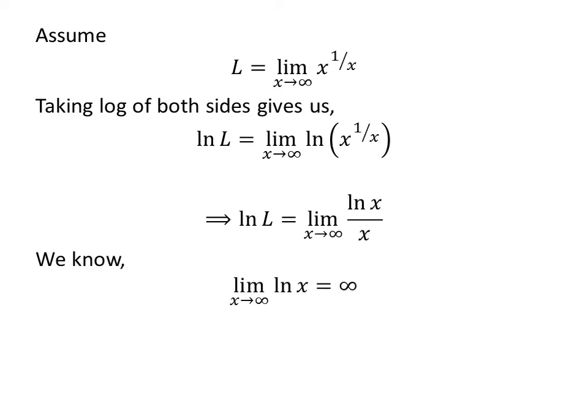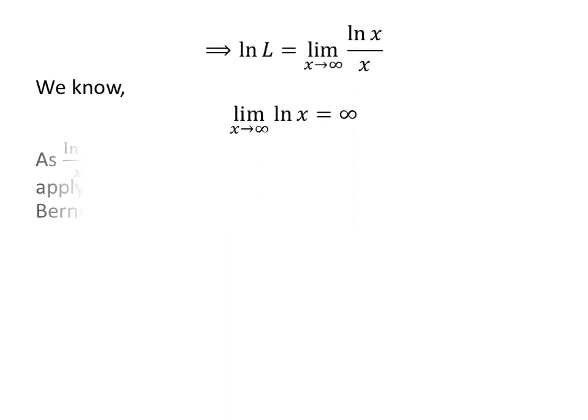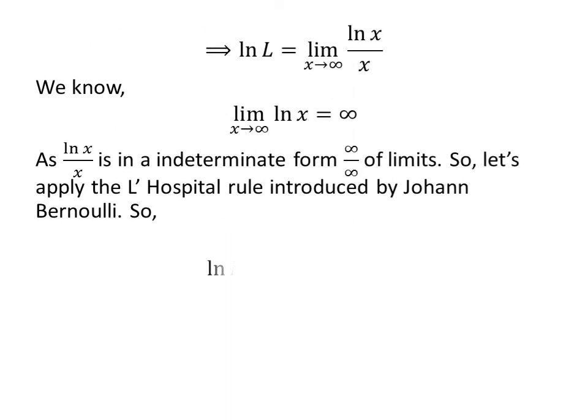We also know natural log of x approaches infinity as x approaches infinity. As natural log of x upon x is an indeterminate form of infinity upon infinity, let us apply the L'Hôpital's Rule introduced by Johan Bernoulli. So, natural log of L is equal to the limit of the derivative of natural log of x with respect to x, upon the derivative of x with respect to x, as x approaches infinity.